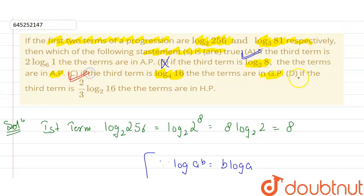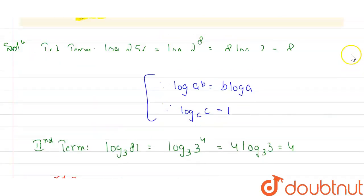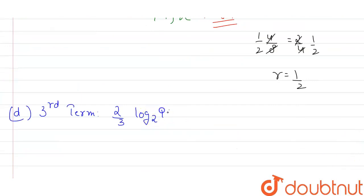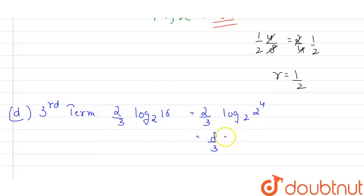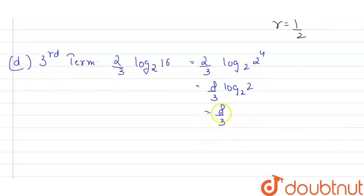Option D says: if the third term is (2/3)·log base 2 of 16, the terms are in HP. Log base 2 of 16 = log base 2 of 2⁴ = 4·log base 2 of 2 = 4. So the third term is (2/3)×4 = 8/3.